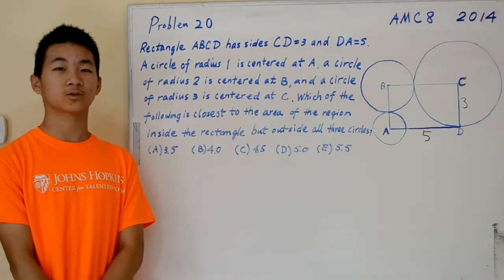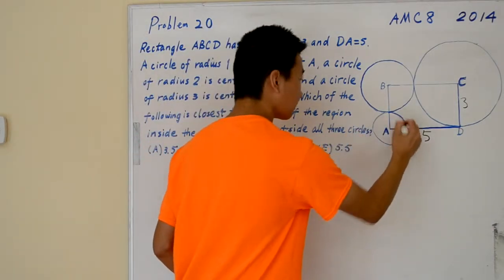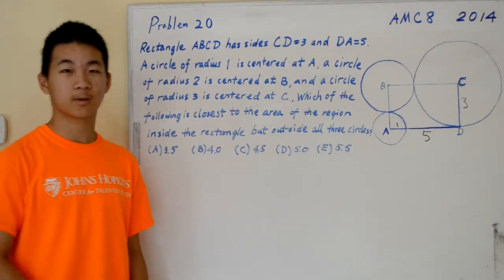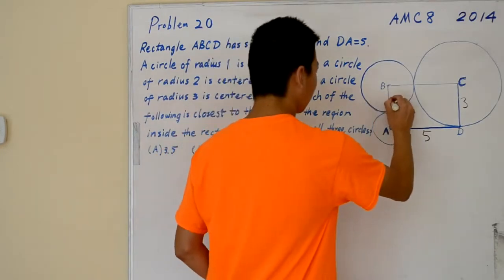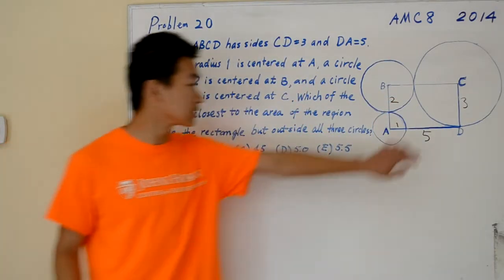A circle of radius 1 is centered at A, a circle of radius 2 is centered at B, and a circle of radius 3 is centered at C.